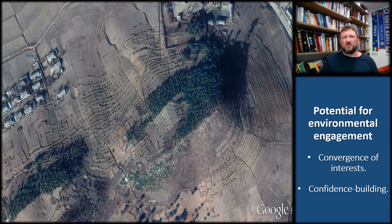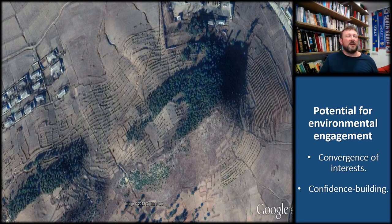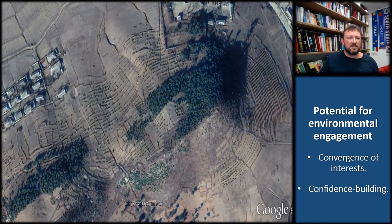The convergence of interests around environmental protection between North Korea and the international community could form the basis for confidence-building measures and humanitarian assistance, particularly around reforestation and soil fertility. As an example, this image depicts a plantation established as a reforestation project with an international NGO.